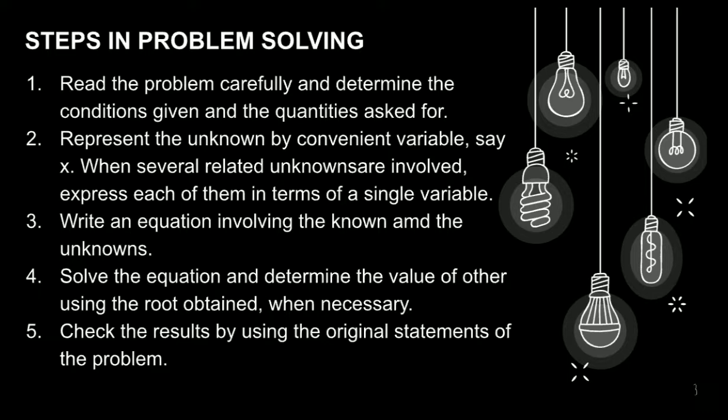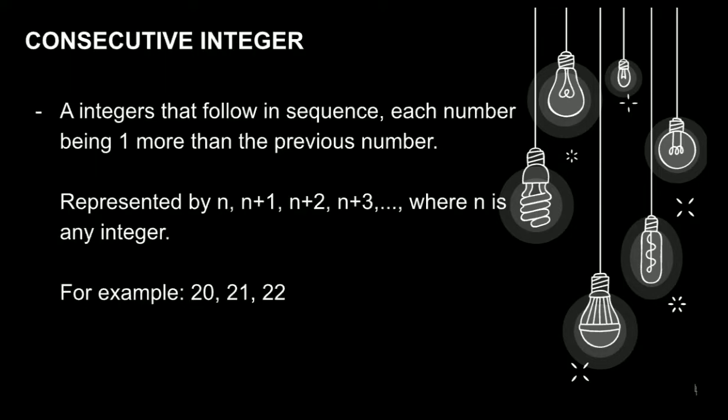1. Read the problem carefully and determine the conditions given and the quantities asked for. 2. Represent the unknown by convenient variable, say X. When several related unknowns are involved, express each of them in terms of a single variable. 3. Write an equation involving the known and the unknowns. 4. Solve the equation and determine the value of other using the root obtained, when necessary. 5. Check the results by using the original statements of the problem. Let us move on to consecutive integers.